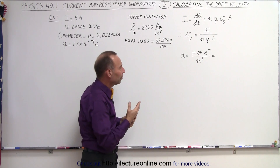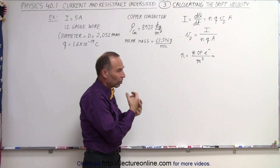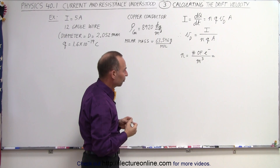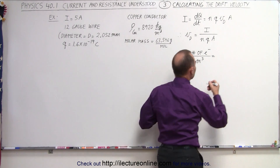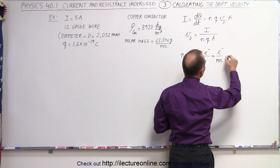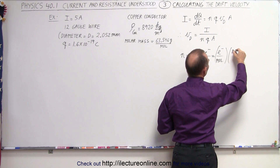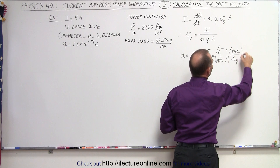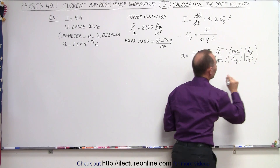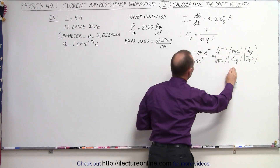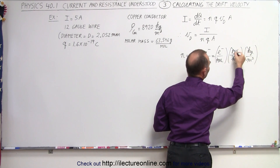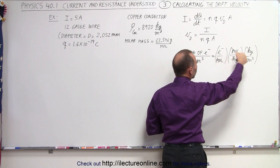How do we find the number of carriers — the number of charges per cubic meter in a copper wire that are allowed to move when we have a potential difference across the wire? We need to calculate the number of charges per mole, multiply this times the number of moles per kilogram of copper, and then multiply this times the number of kilograms per cubic meter. Notice that the moles cancel out, the kilograms cancel out, and we get the number of charges per cubic meter.